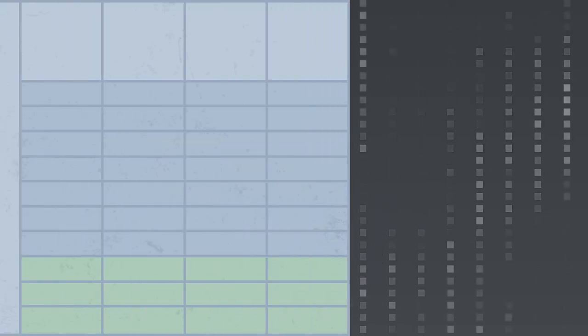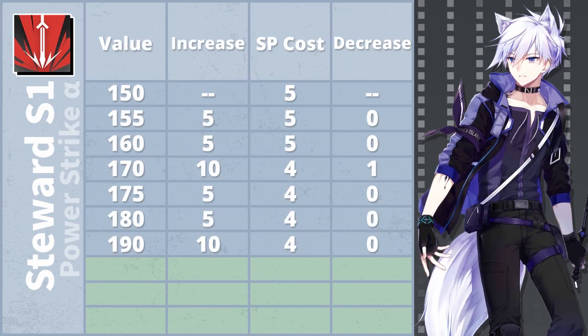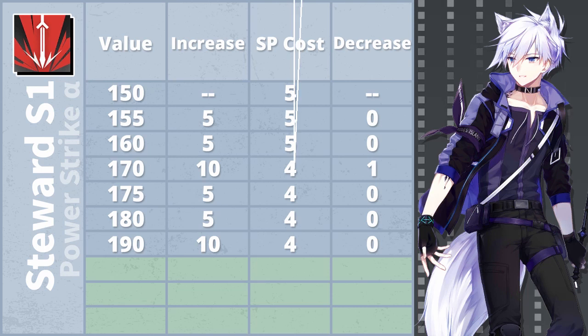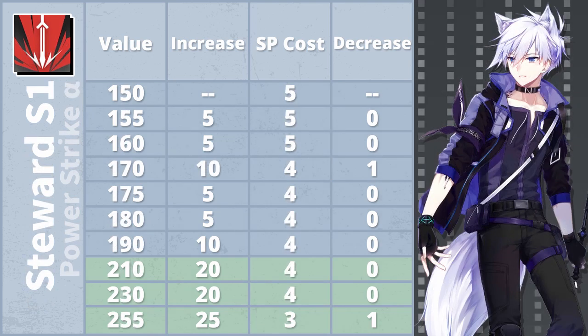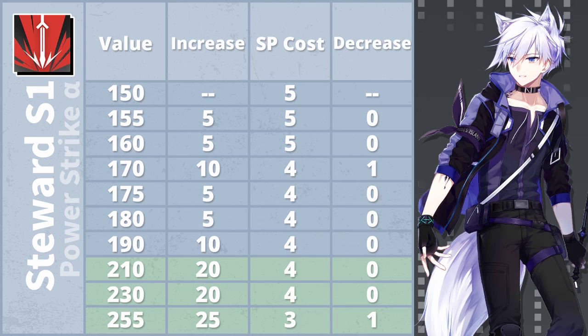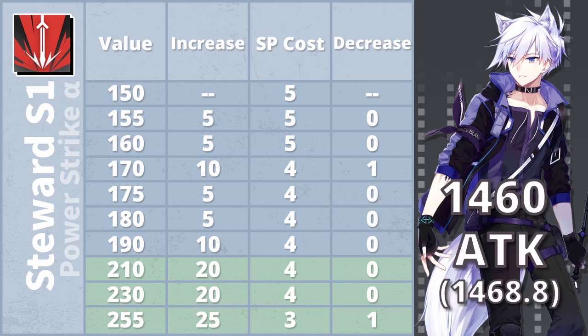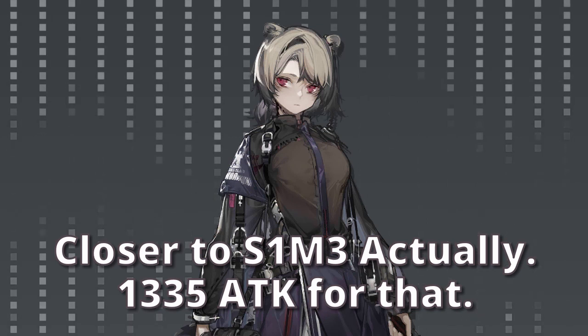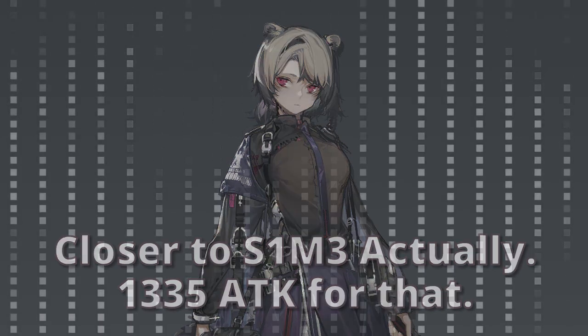If you look at this table, you'll see Steward's skill, Power Strike Alpha, and the numbers behind it. And here is Silver Ash's Power Strike Gamma. Copying the mastery levels over to Steward, it gives us a powerful 255% multiplier and 3 SP cost. This would make every 4th attack deal 1460 damage. That is around an S1-L7 Absinthe firepower, not bad for a 3-star.